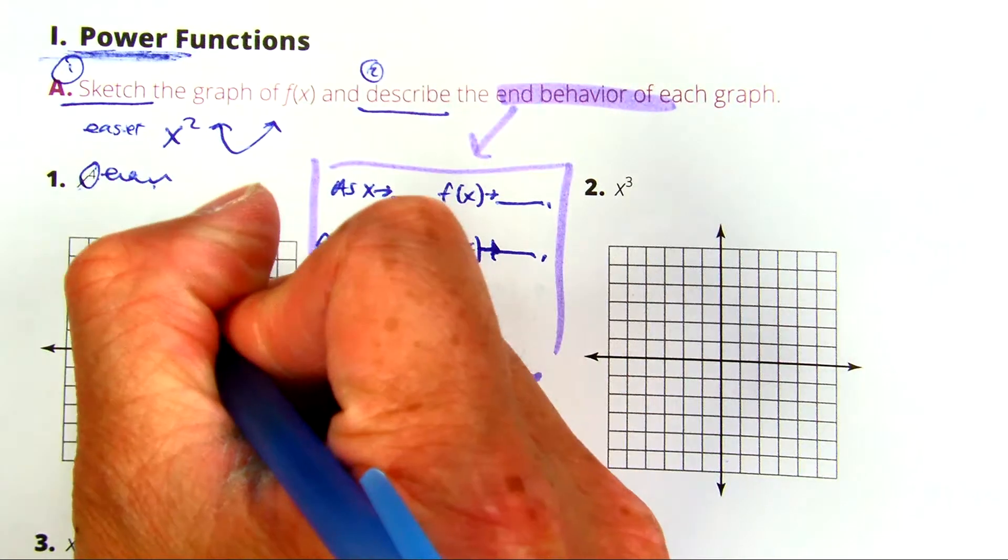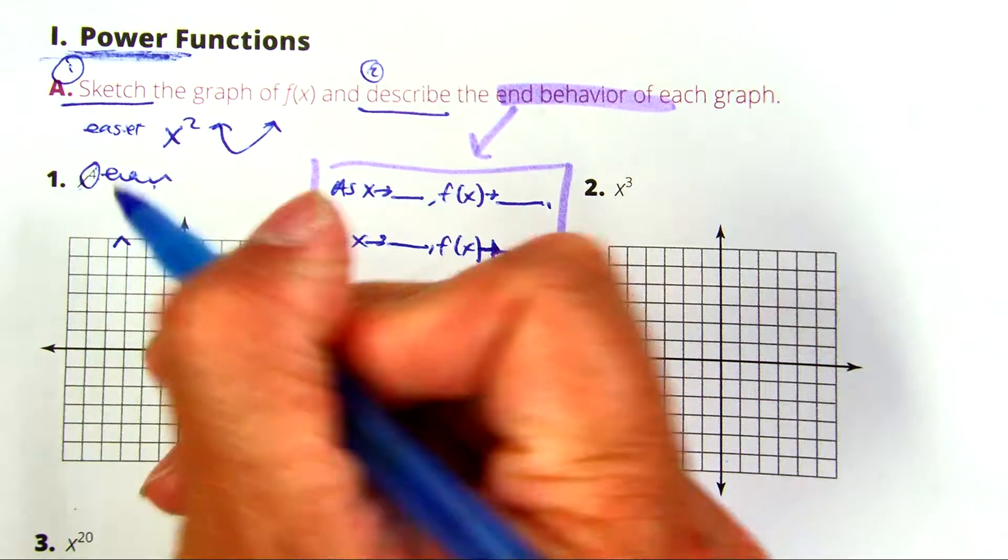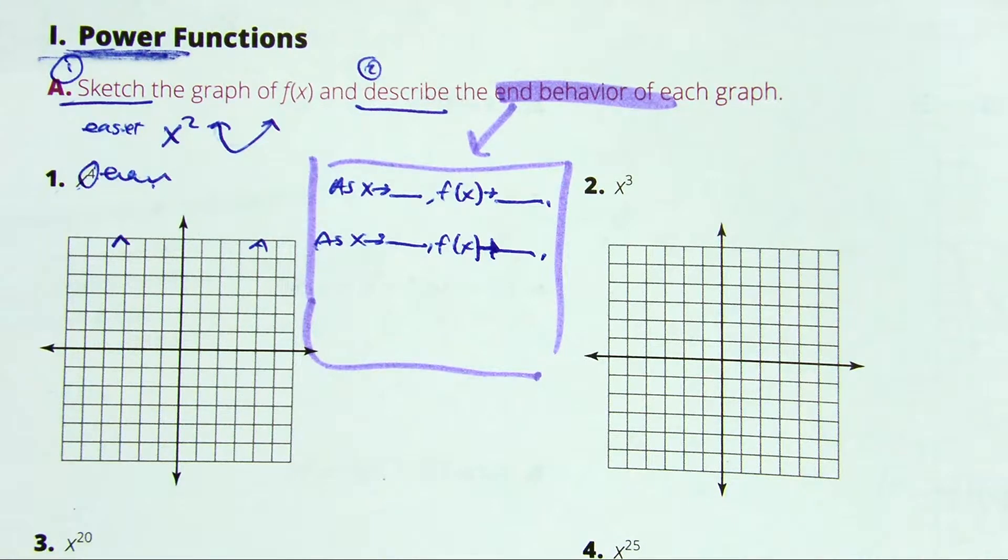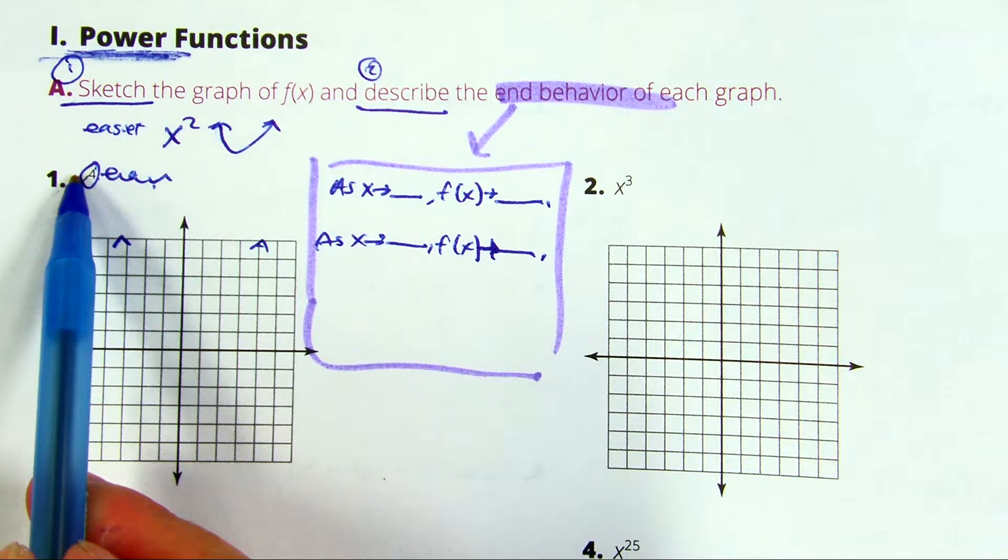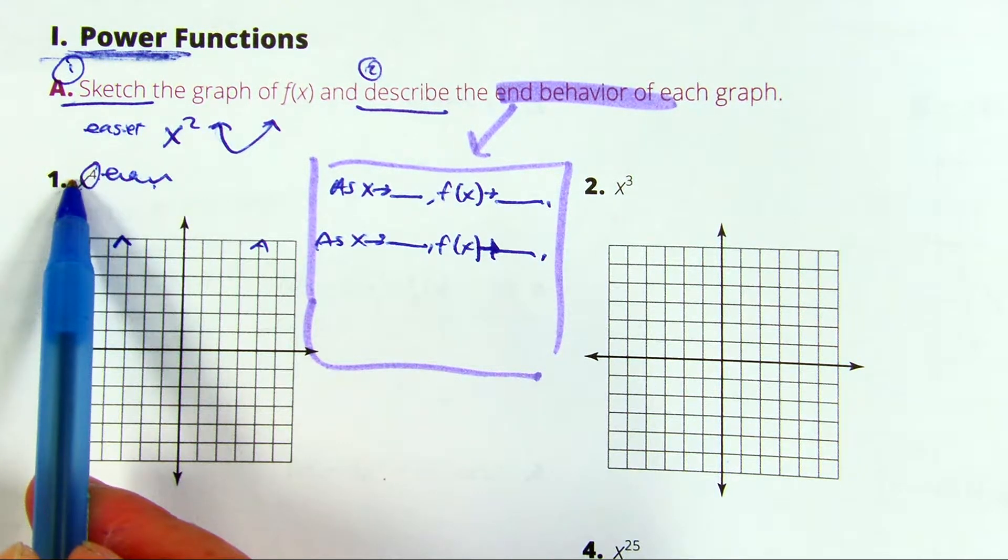So mine's going to do the same thing. Now, later in questions 5 and 6, you might want to look for the leading coefficient. A leader is always in front. A leading coefficient is either positive or negative.